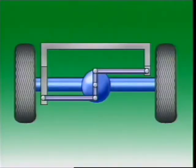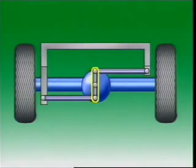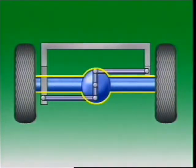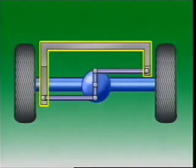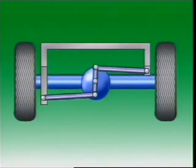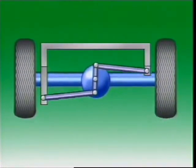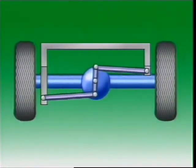The axle may also be located by a watts linkage. A lever mounted on a pivot near the centre of the axle housing is connected by rods to the frame on each side of the vehicle. This maintains the axle in alignment with the frame while still allowing the suspension to move vertically.